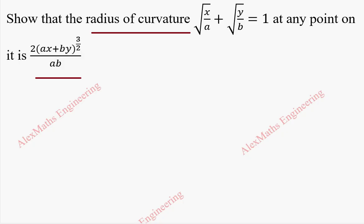Now, we are going to take the equation and rewrite it as root x by root a plus root y by root b equal to 1, so that the differentiation will become easier because this is a constant.